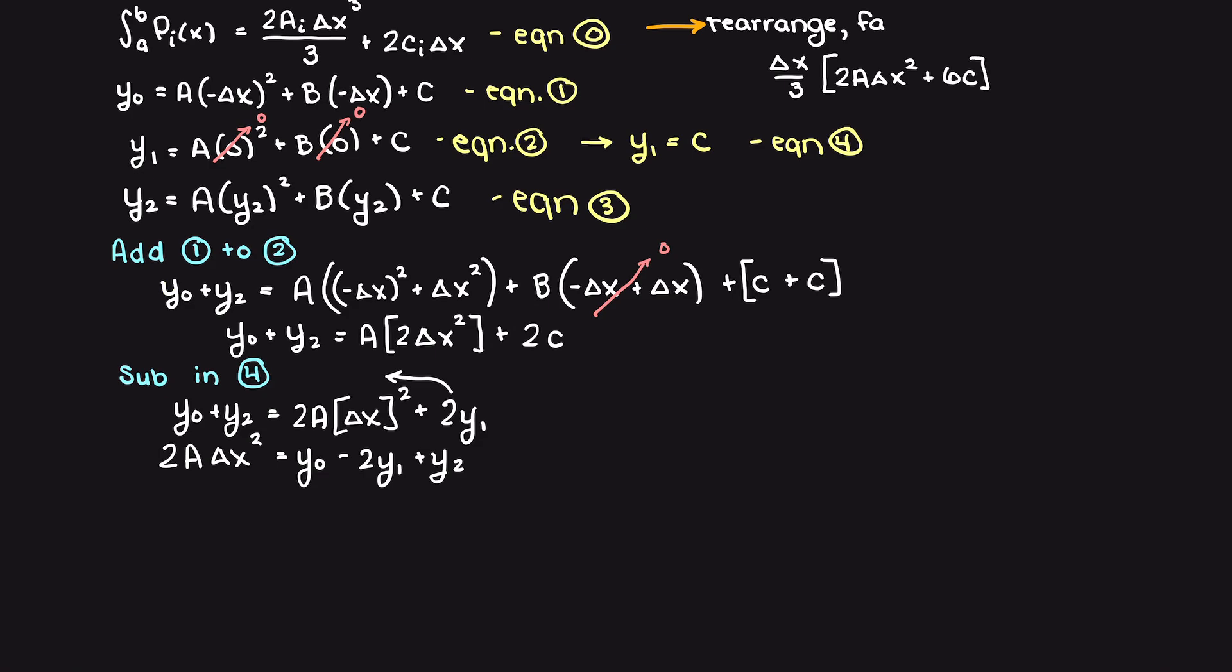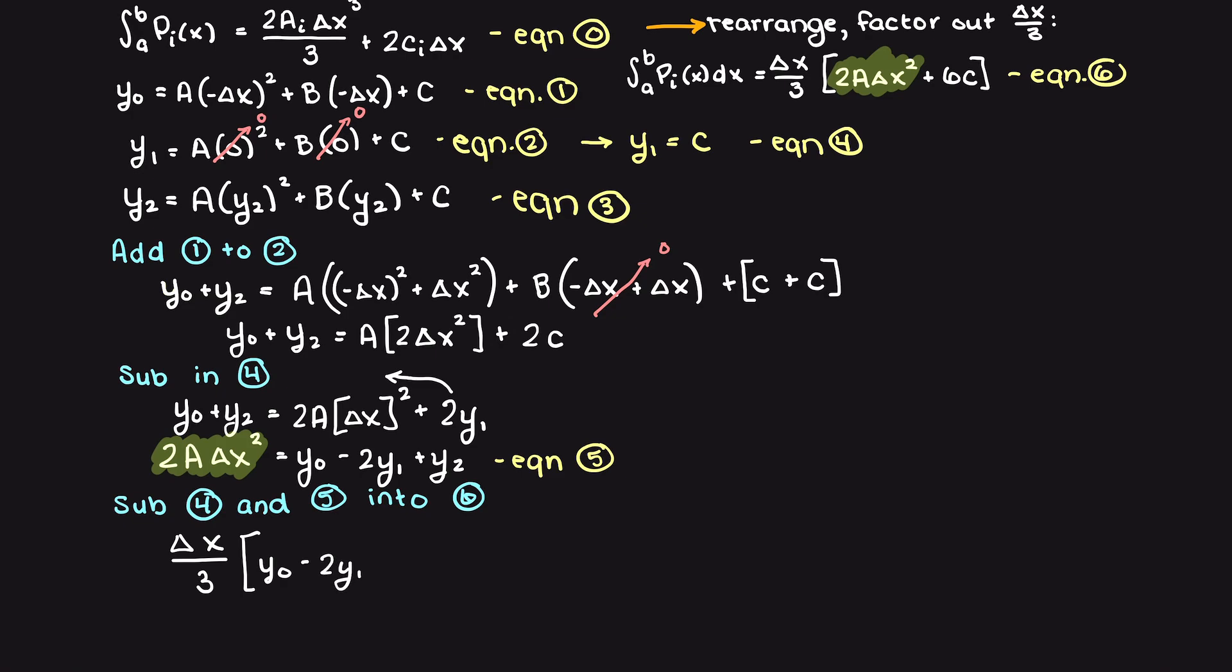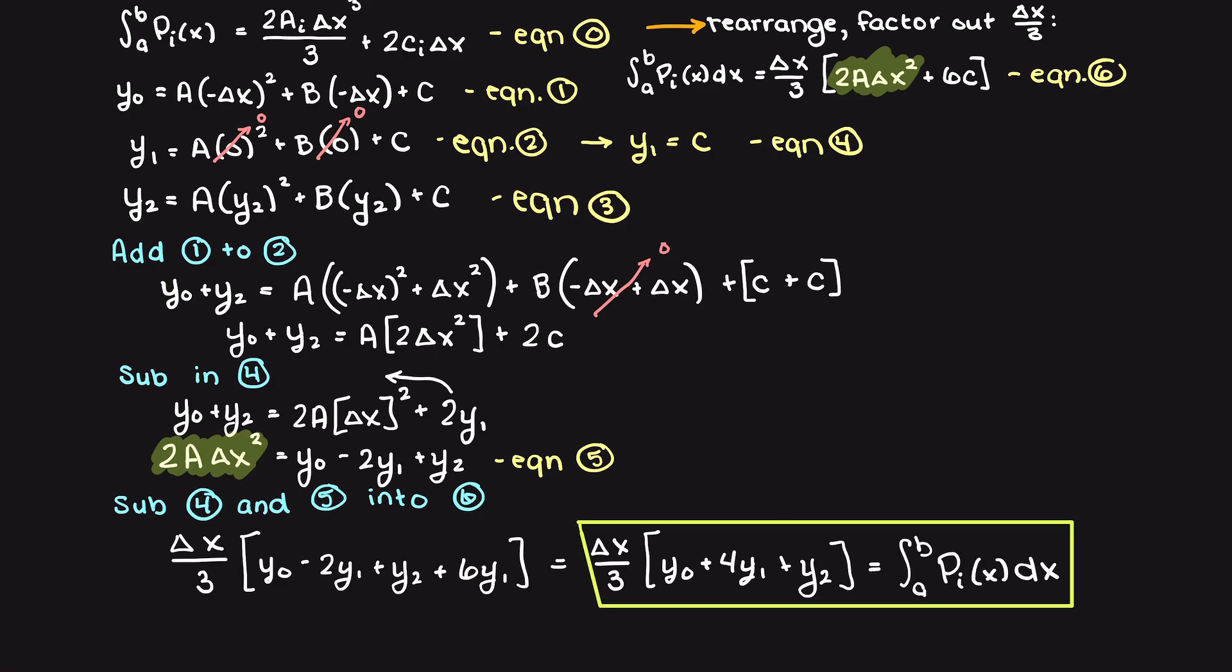Recalling equation 0 from earlier, we can do some clever algebra and arrange it into this convenient form that has a common term to our working equation. Therefore, subbing in equations 4 and 5 into equation 6, we get the following equation, which is the definite integral of our parabola bounded by our step size delta x.